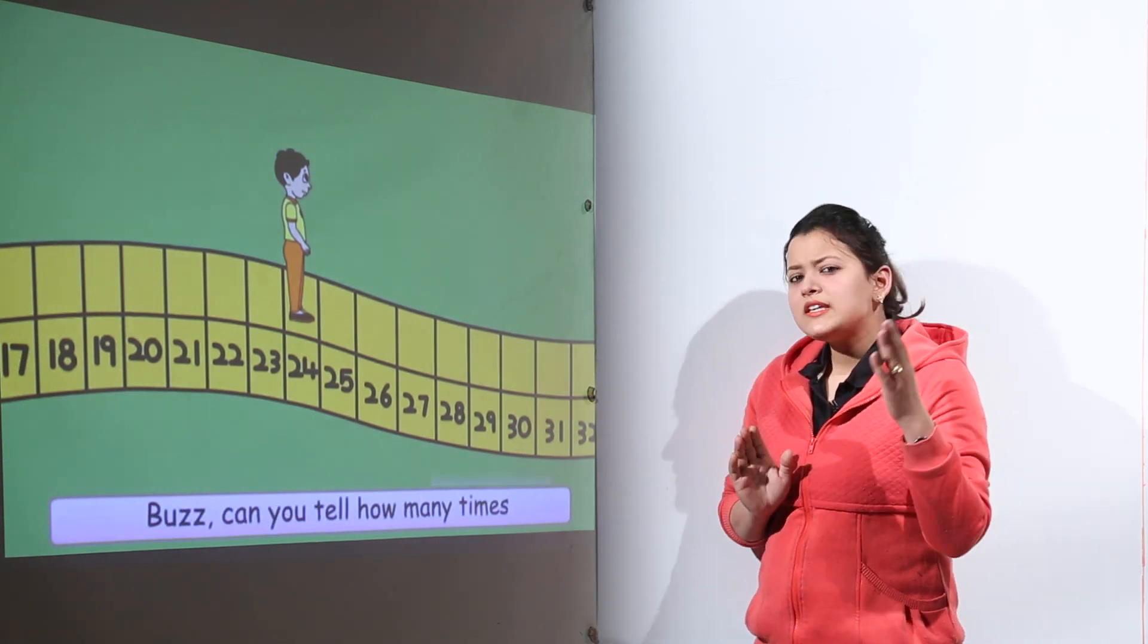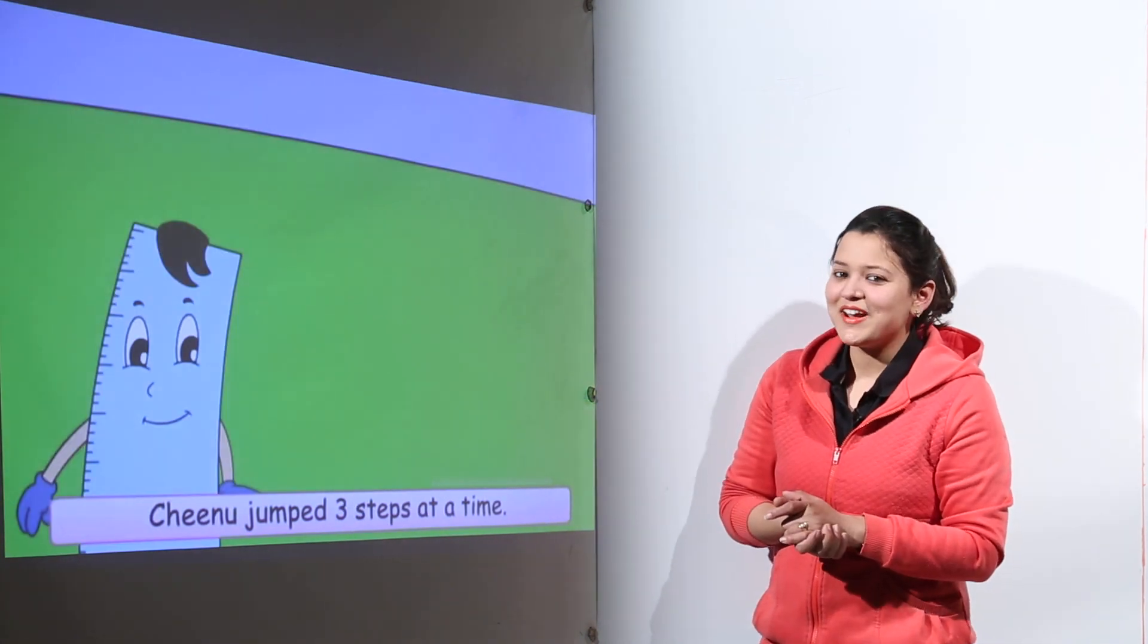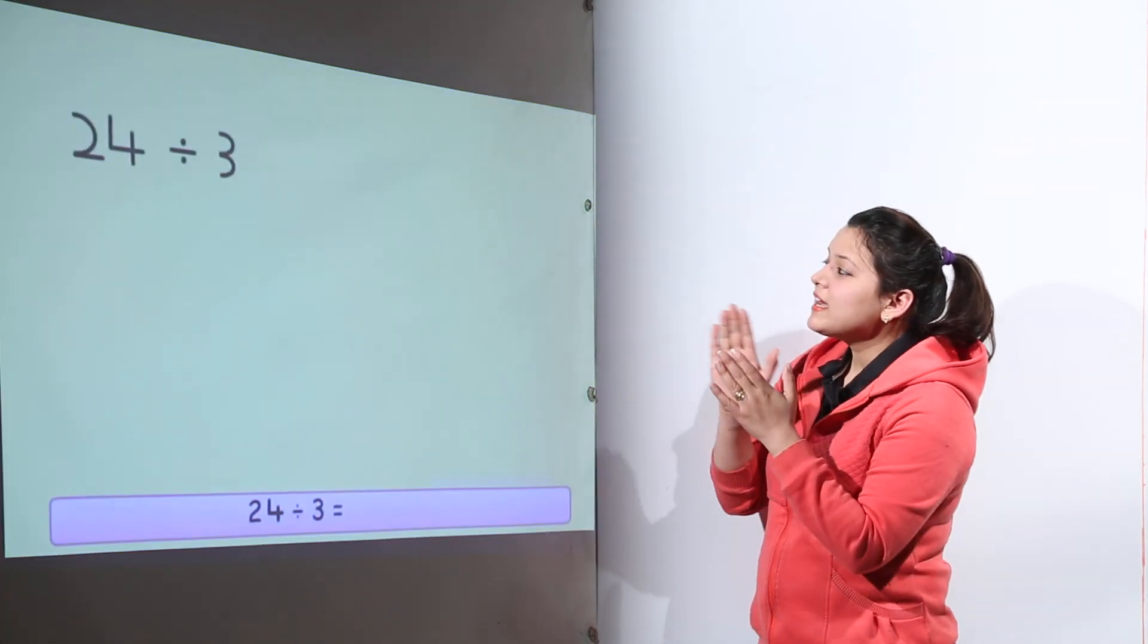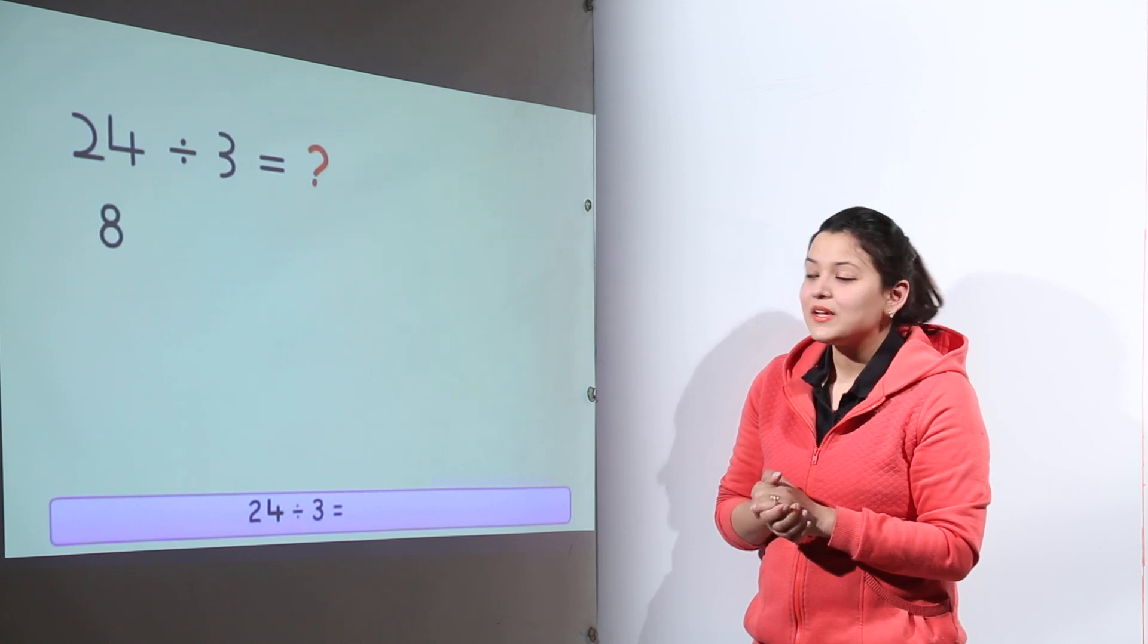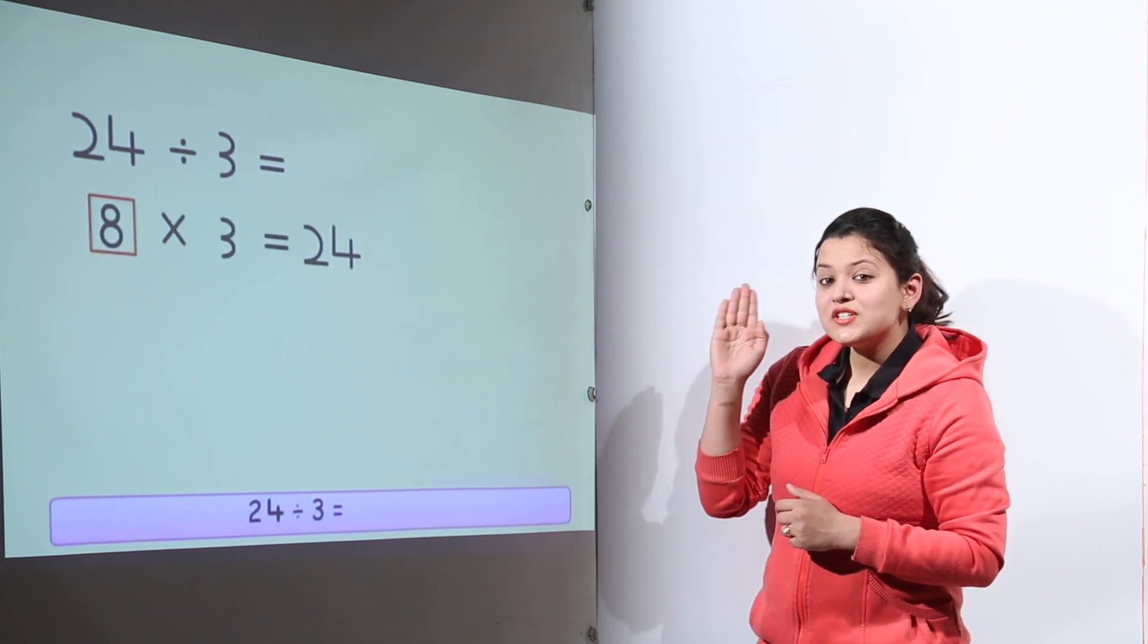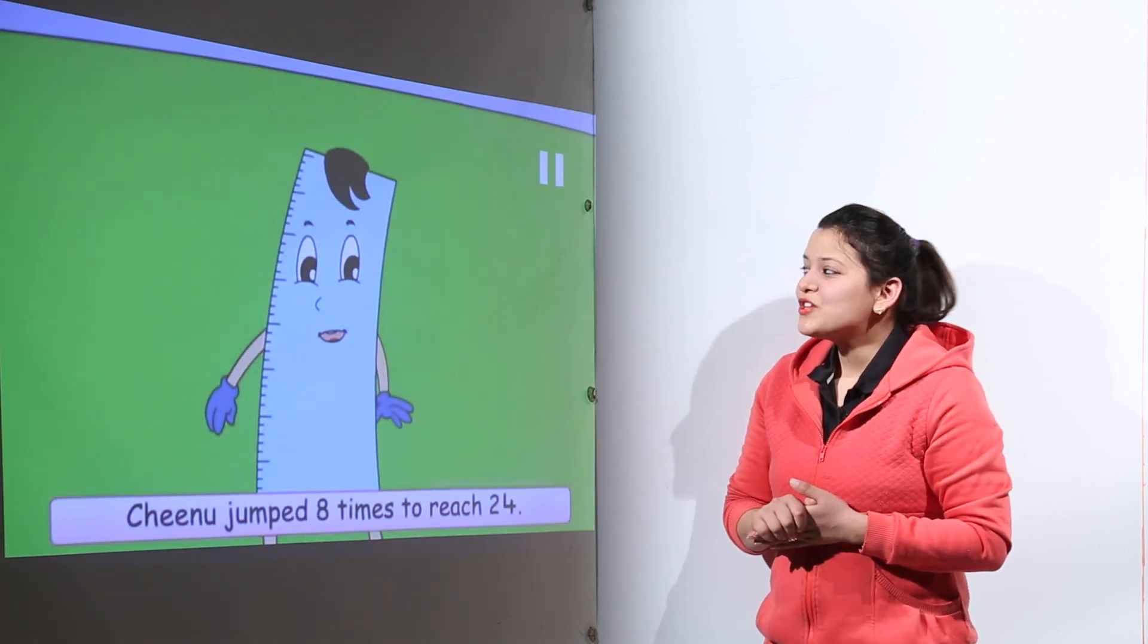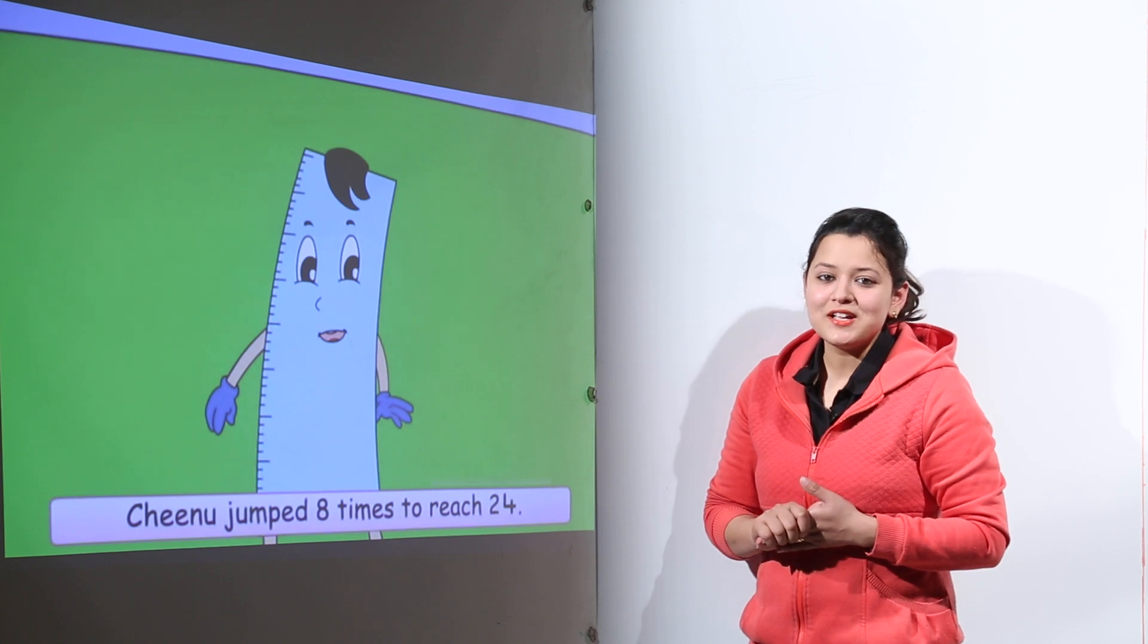Now up to here can you tell me how many jumps he has done? It's very simple. Now what we can do? Foota is also going to help us out in that. He has jumped up to 24. And how many steps did he jumped in one jump? He jumped 3. So 24 divided by 3 is 8. Because 8 threes are 24. So we come to know that Chinu has jumped 8 times to reach 24.